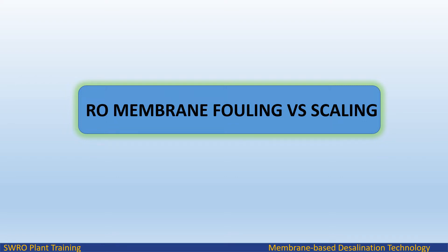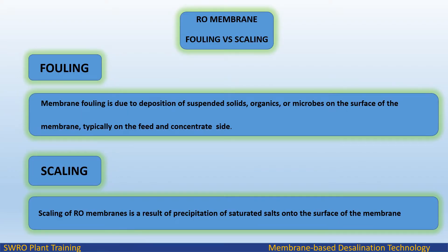RO Membrane Fouling is due to deposition of suspended solids, organics, or microbes on the surface of the membrane, typically on the feed and concentrate side. RO Membrane Scaling is a result of precipitation of saturated salts onto the surface of the membrane.